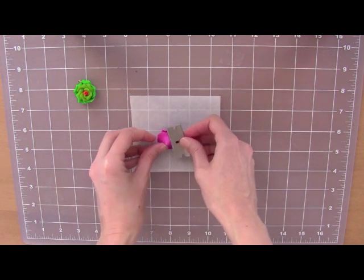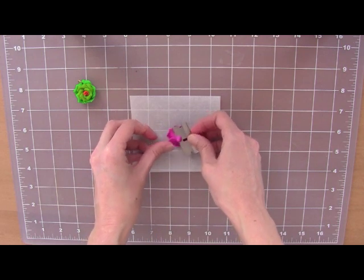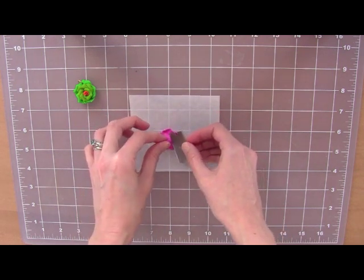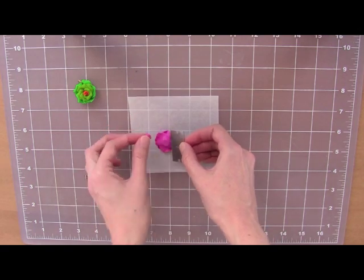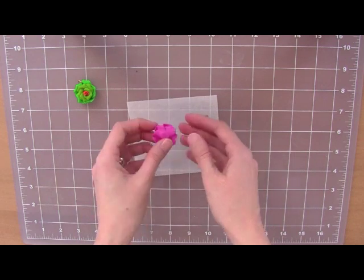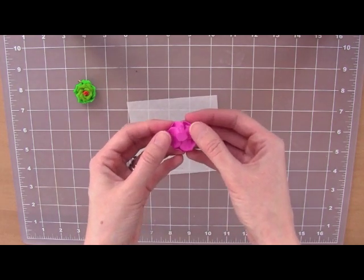Instead we want to lay it flat and gently cut, still using that stem to help keep the blade away from our fingers. And there you go. Now no cutting of the fingers, but we have a nice flat back, perfect for earrings.